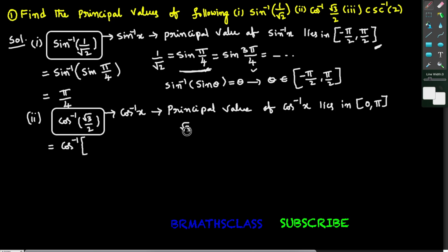From trigonometry we know that root 3 by 2 we can write as cos 30 degrees. Cos pi by 6 is root 3 by 2, and cos 300 degrees value is also root 3 by 2. Which one do we need to choose? We can write like this so many.